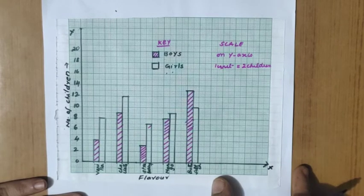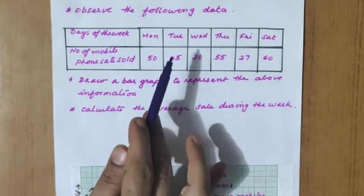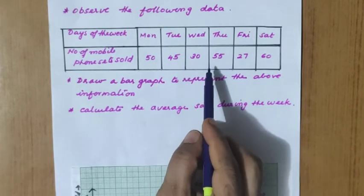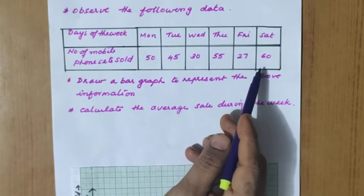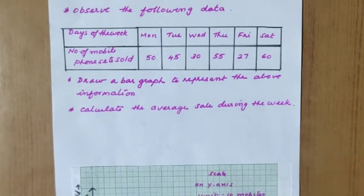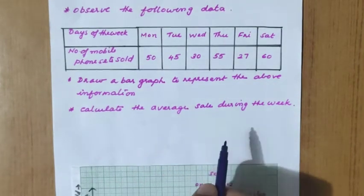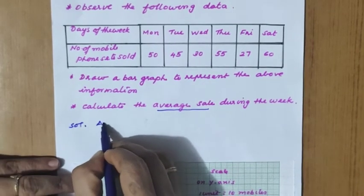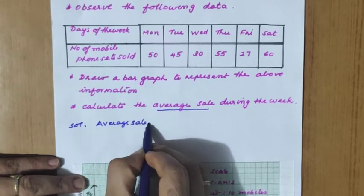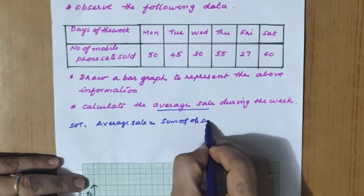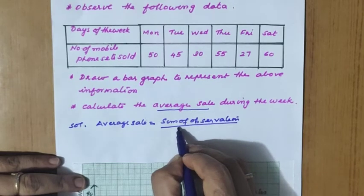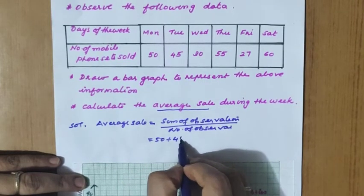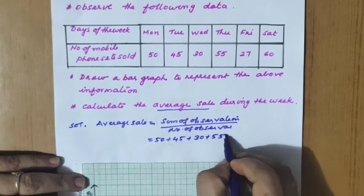The next question gives data on mobile phone sets sold each day of the week: Monday 50, Tuesday 45, Wednesday 30, Thursday 55, Friday 27, Saturday 60. We are asked to draw a bar graph and calculate the average sale. Average equals sum of observations divided by number of observations.